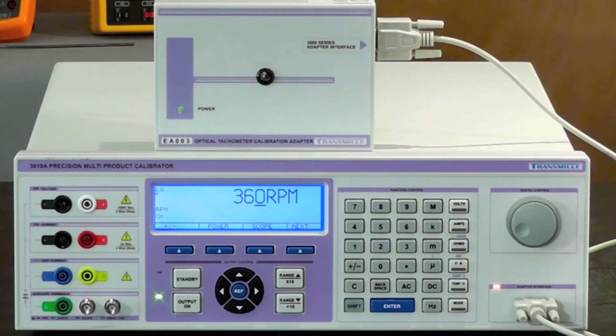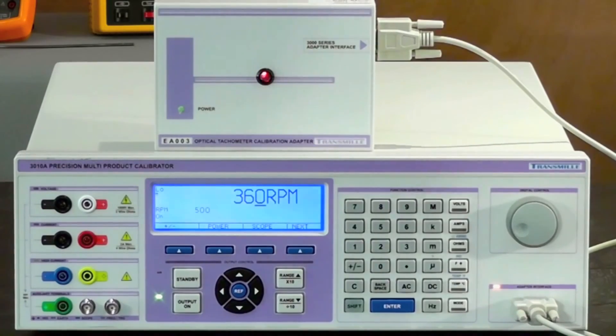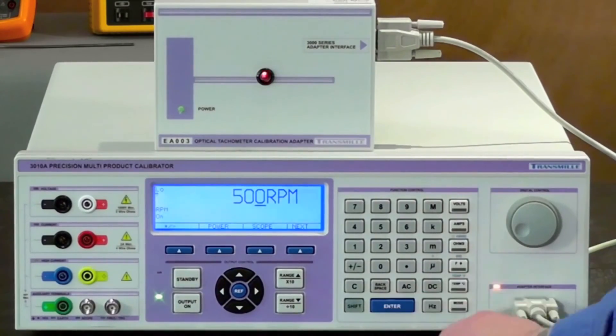To set the RPM of the adapter, use the numeric keys to enter a value between 60 and 60,000, for example 500, followed by pressing the blue enter key to confirm.